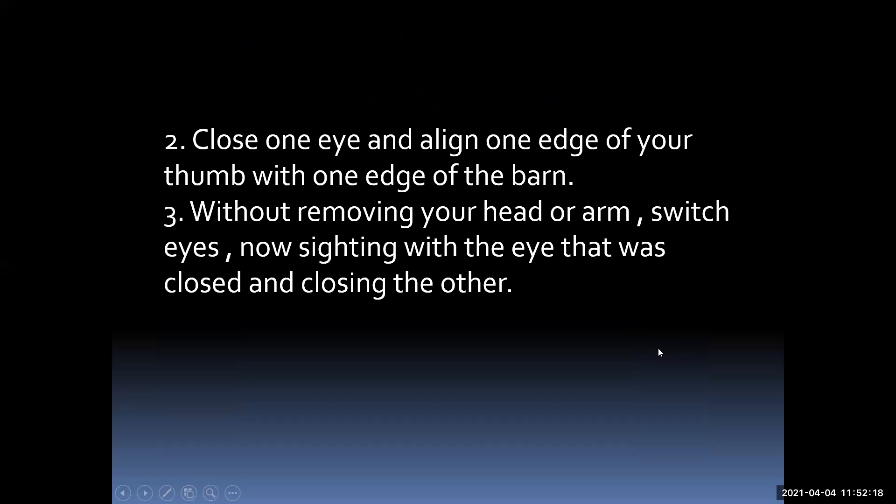Second, close one eye and align one edge of your thumb with one edge of the barn. Third, without removing your head or arm, switch eyes, now sighting with the eye that was closed and closing the other. Basically, close one eye, note the alignment, then switch eyes and observe the change.